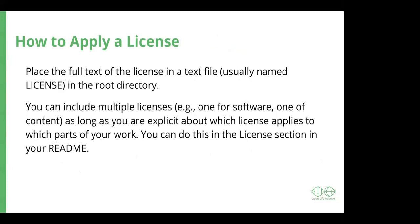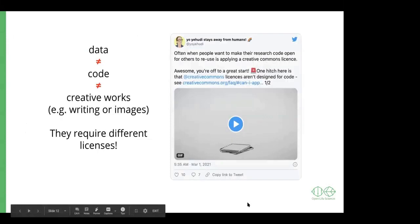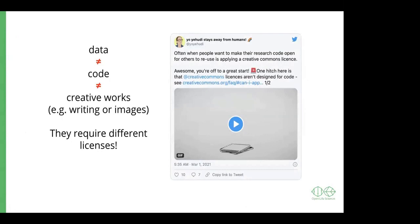Let's go into the details of how you apply a license. A license file is usually named LICENSE in all caps, and it goes in the root directory — the topmost folder of your project. You can include multiple licenses, which is important because you might have different components requiring different licenses. Licenses best for software are not ideal for content like images or writing, and vice versa. You can specify in the README or the license file exactly which parts of your project are associated with which license.